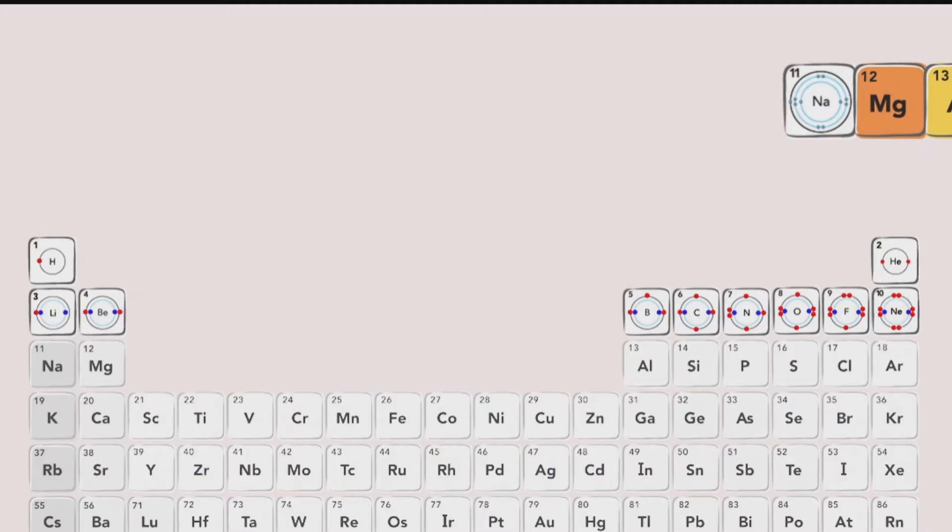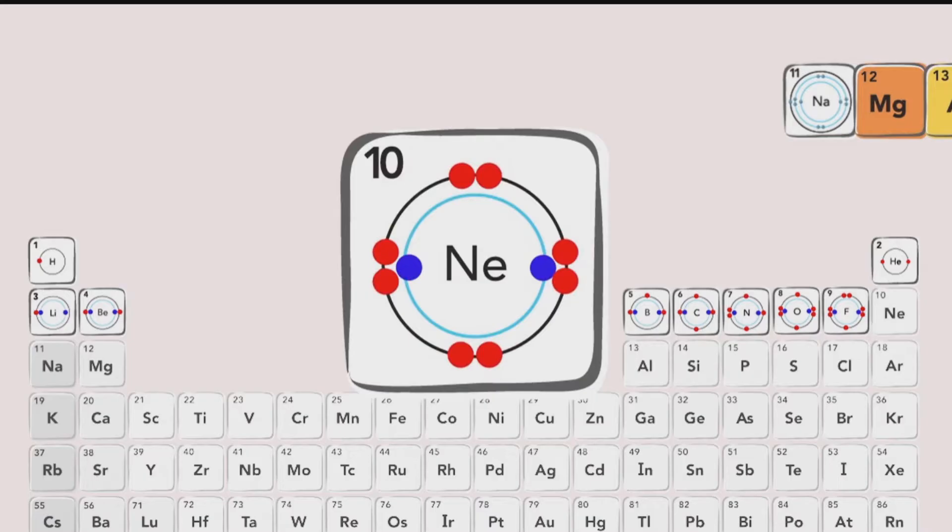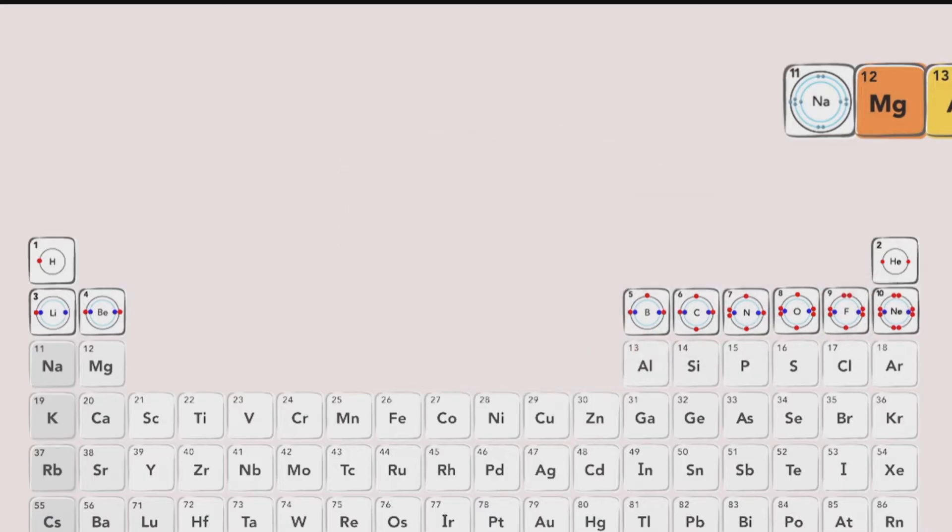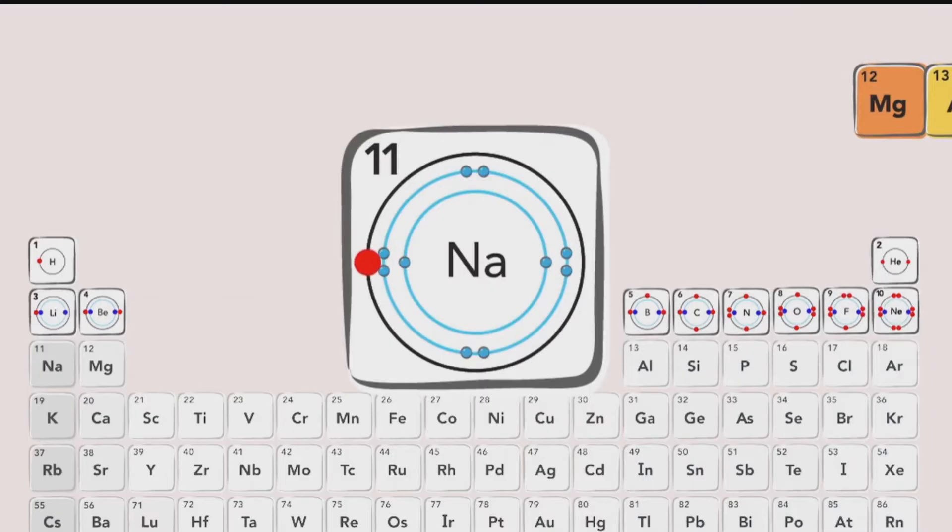The maximum number of valence electrons, however, is eight. Notice that the second period begins with lithium, with only one valence electron. It ends with neon, which has eight. The number of valence electrons resets to one again with element 11, which is sodium.